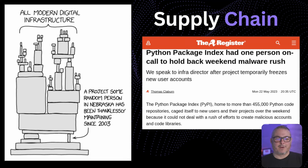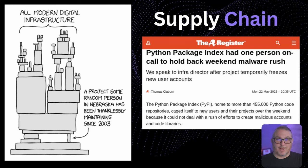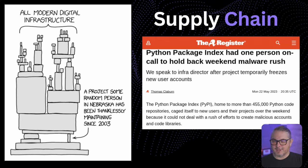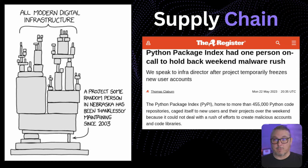There's a well-known graphic: 'All modern infrastructure depends on a project some random person in Nebraska has been thanklessly maintaining since 2003.' This happens a lot in software development — the supply chain is fragile because there's always that one critical dependency that, if compromised, pulls the whole system down. Python Package Index had one person on call to hold back a weekend malware rush, temporarily freezing new user accounts because it couldn't deal with a rush of efforts to create malicious accounts and code libraries.